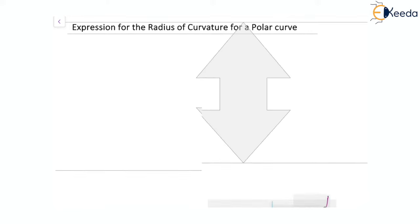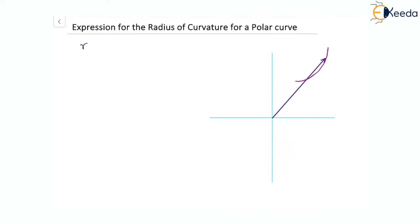For the polar coordinate system, consider a curve r = f(θ). Let P be any point on the curve, represented in terms of r and θ. O is the pole and OX is the initial line. The angle made by OP is θ. Drawing a tangent extended to meet the initial axis at point T, the angle psi is the slope of the tangent with the initial line, and the angle between the radius vector and the tangent is phi.